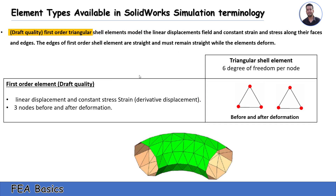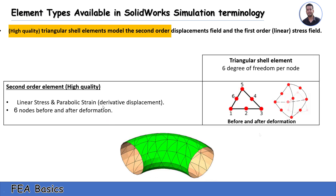We also have two types of shell elements. The first is draft quality, or first order triangular, which has a triangular shape that does not change before or after deformation, with linear displacement and constant stress, and three nodes at corners. The second type is high quality triangular shell element, which has a parabolic shape after deformation, with linear stress and parabolic strain, and six nodes.